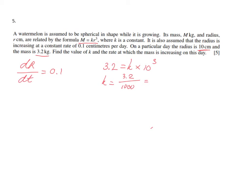So k will be 3.2 divided by a thousand, which is 0.0032. So that equation actually looks like M equals 0.0032 r³. We found the value of k.